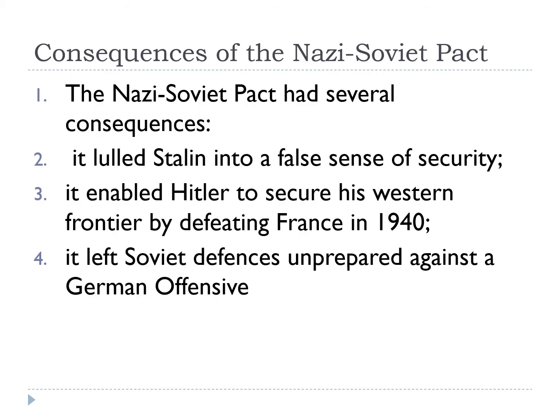The Great Patriotic War was a direct consequence of the Nazi-Soviet Pact, which had several consequences. First, it lulled Stalin into a false sense of security — he believed he had bought time to build up military defences. Second, it enabled Hitler to secure his western frontier by defeating France in 1940 before turning his attention on Russia. Lastly, it left Soviet defences unprepared against a German offensive, because they didn't think Hitler would break the pact so quickly.